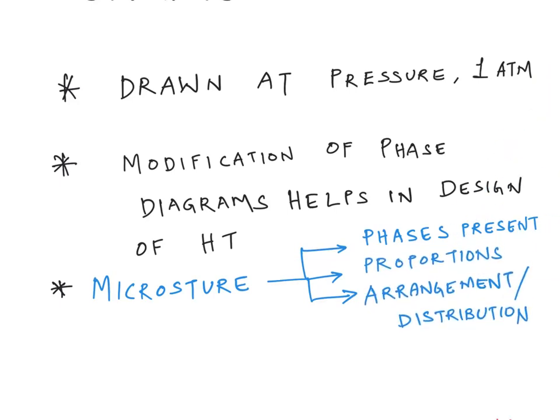It will depend upon the phases present. I already explained you what is a phase, how you can distinguish whether your system is a single phase or a two-phase system. Then the proportions in which these two phases are present and the arrangement, whether the second phase is distributed as flakes or as spherical particles. All these things will influence the microstructure and this microstructure will in turn influence your mechanical properties.